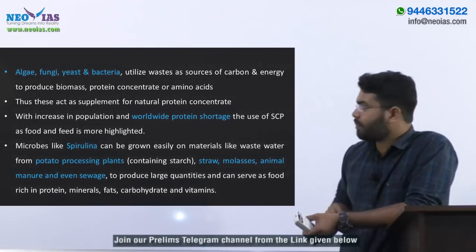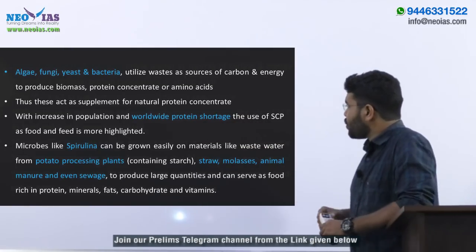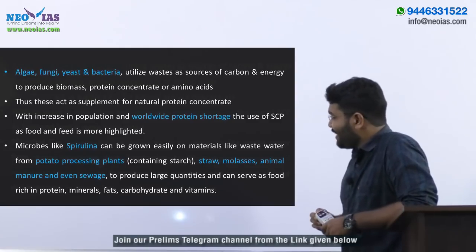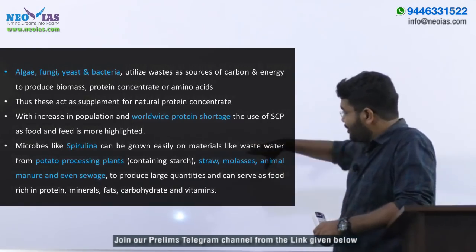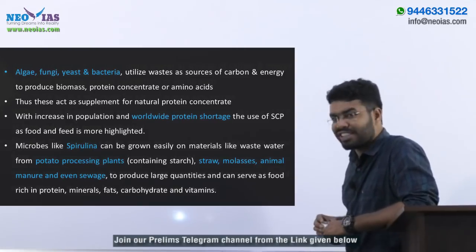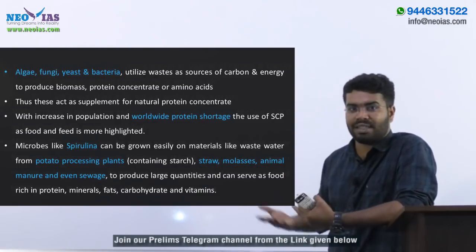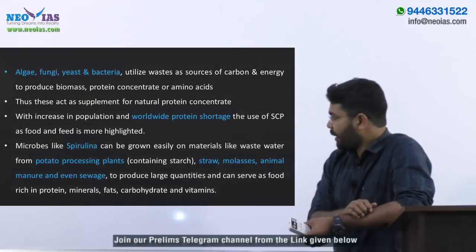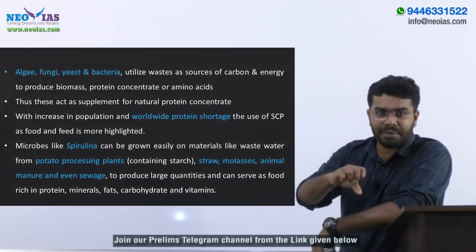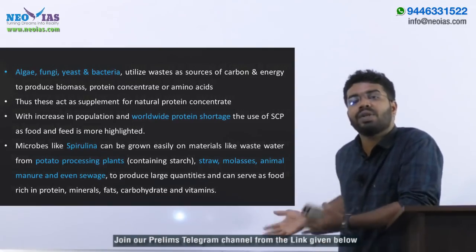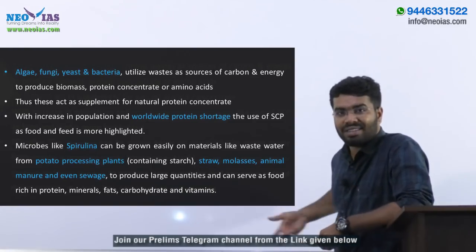Single cell protein acts as a supplement for natural protein. With increasing population and worldwide protein shortage, the use of SCP as food and feed is more highlighted. The organism we are talking about is Spirulina. Microbes like Spirulina can be grown easily on materials like wastewater from potato processing plants containing high amounts of starch, straw, molasses — the byproduct of the sugarcane industry — animal manure, and even sewage. These all contain nutrients that can be absorbed to produce large quantities of food rich in protein, fats, minerals, and fiber.